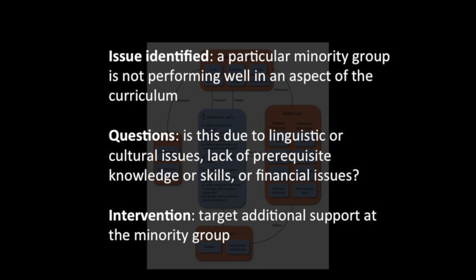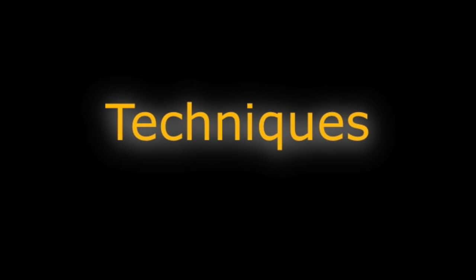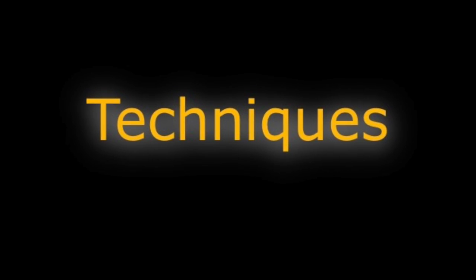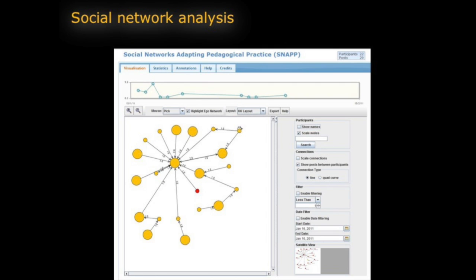Now for a few techniques of learning analytics. One is social network analysis — used in business, anthropology, and other sciences. Those circles represent individual students; the one in the middle with all the arrows pointing to it is a particularly well-connected student known as a node. You can see the strength of connections to others represented by lines with numbers, indicating better or weaker connections between students.